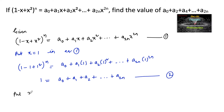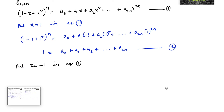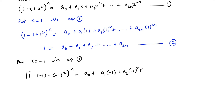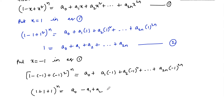Now put x = -1 in Equation 1. So we get (1 - (-1) + (-1)²)ⁿ = a₀ + a₁(-1) + a₂(-1)² + ... + a₂ₙ(-1)^(2n), which simplifies to (1 + 1 + 1)ⁿ = a₀ - a₁ + a₂ - a₃ + ... + a₂ₙ.